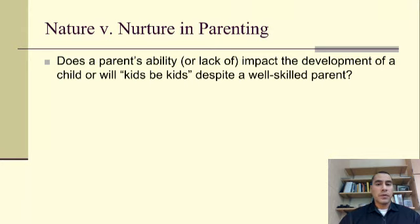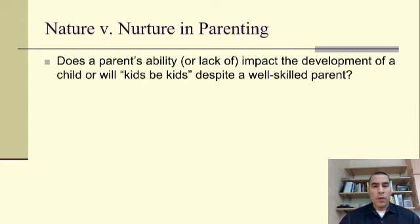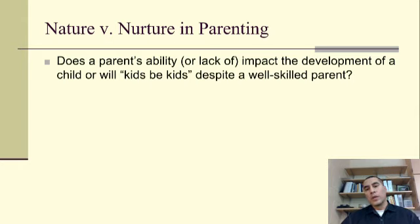This brings up the enduring issue of nature versus nurture in parenting. The previous discussion showed how a parent's style can impact a child's development — an environmental influence. But will kids just be kids regardless of the parent involved? What if a child behaves in a way that prevents a parent from using their preferred style? By now we know the answer: both nature and nurture play a role. So we can't blame everything on our parents — some of it is our own doing.